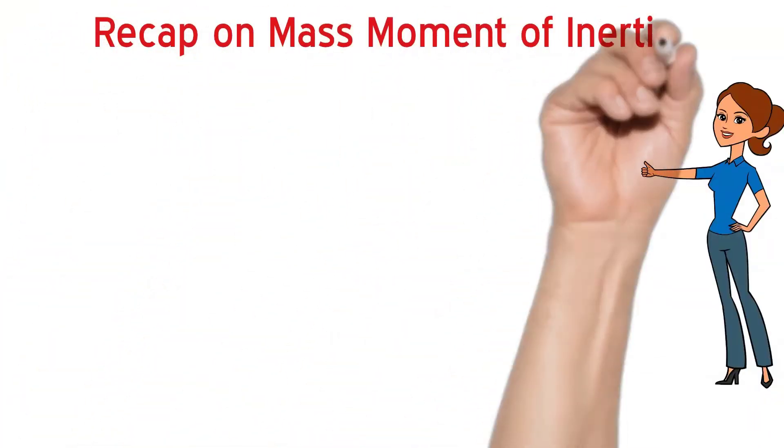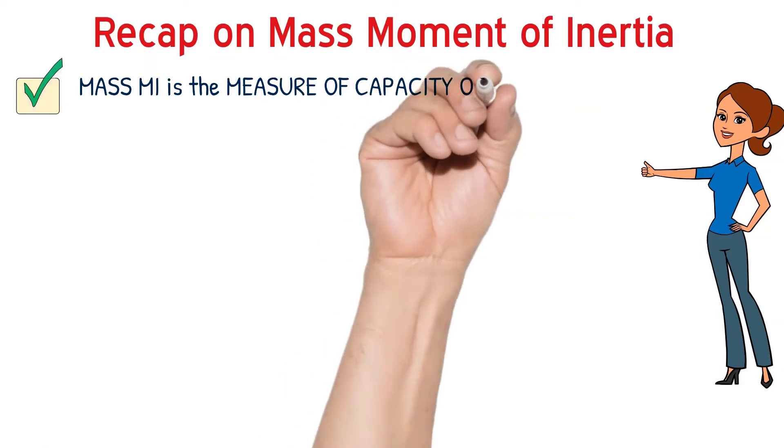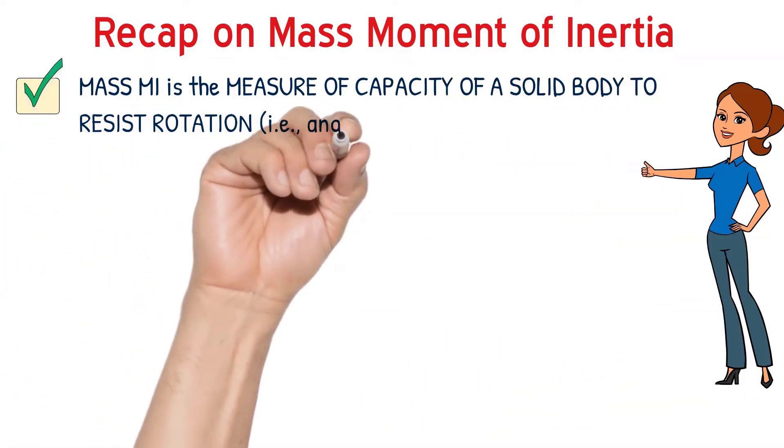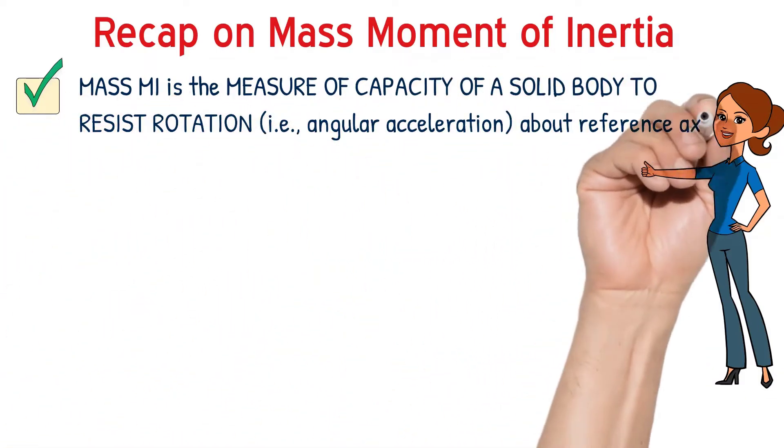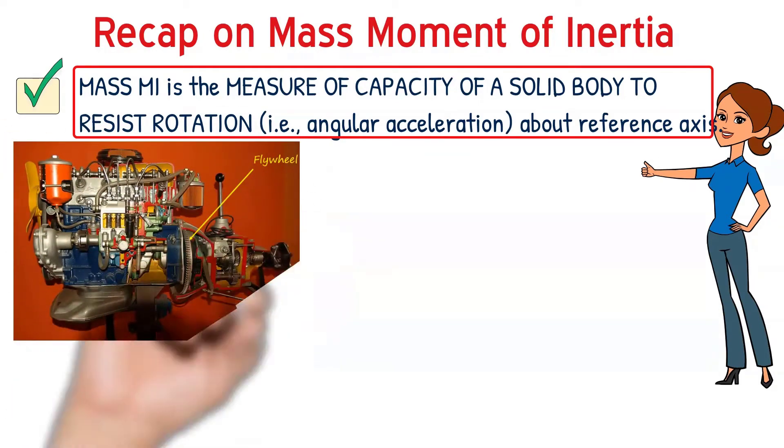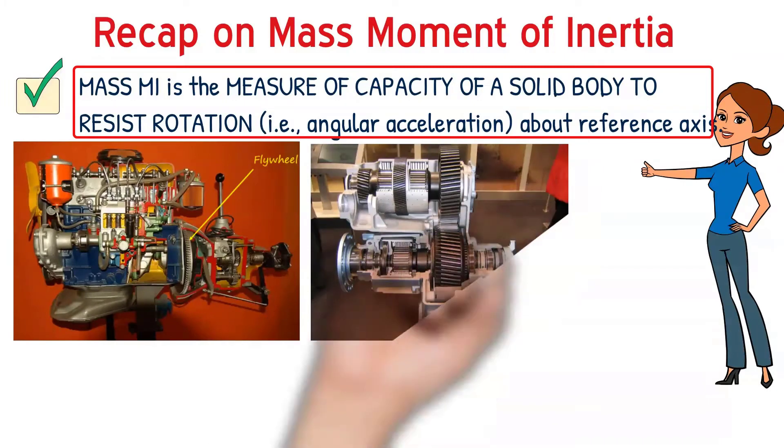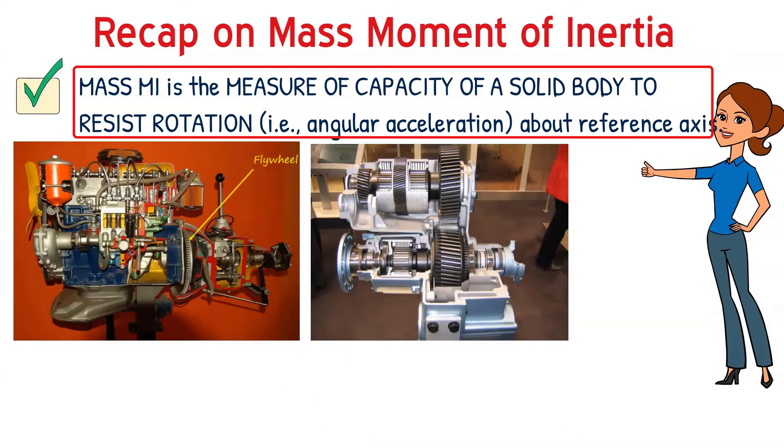Now, let us move on to the second term, mass moment of inertia. F equals ma. The other variation of the formula is T equals I alpha. When we have resistance against rotational motion, we call the term mass moment of inertia. It is the measure of capacity of a solid body to resist angular acceleration.